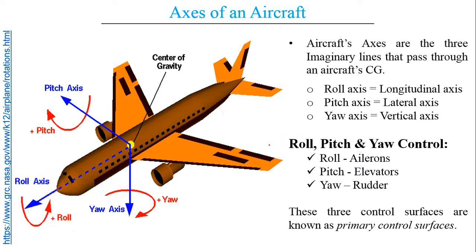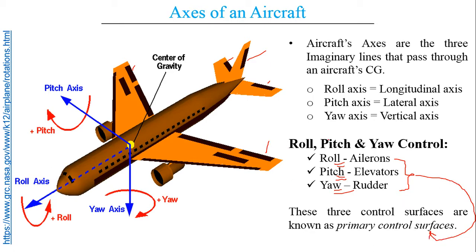The ailerons on both left and right sides of the fuselage control the rolling action. The elevators on the left and right side of the horizontal stabilizer control the pitch. The rudder, which is on the vertical fin, controls the yaw motion of an aircraft. These three control surfaces combined form the primary control surfaces, as they control the primary motions of an aircraft — roll, pitch and yaw.